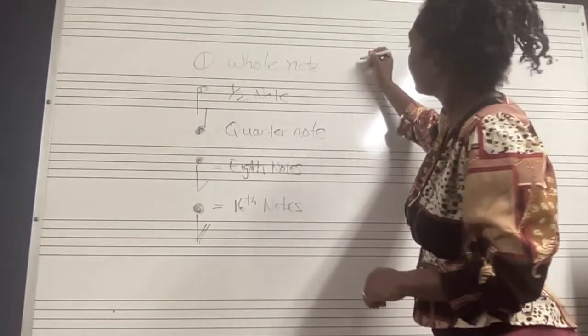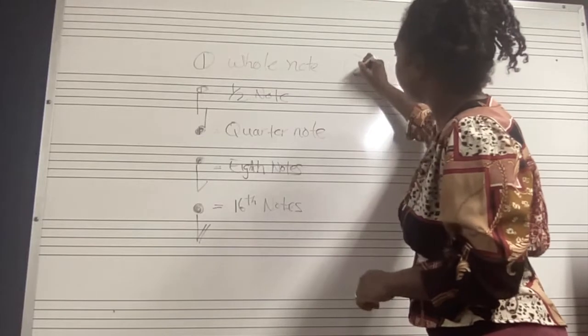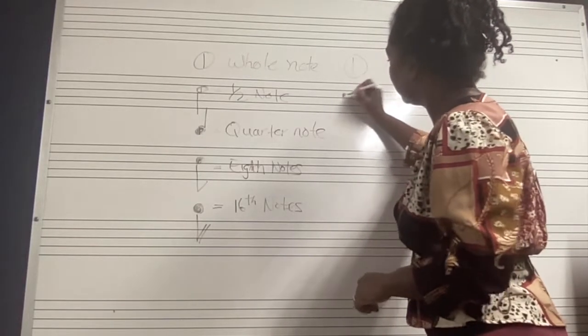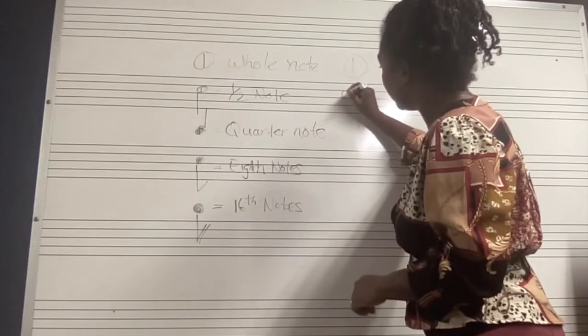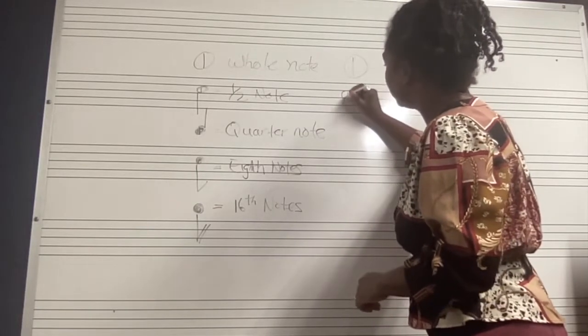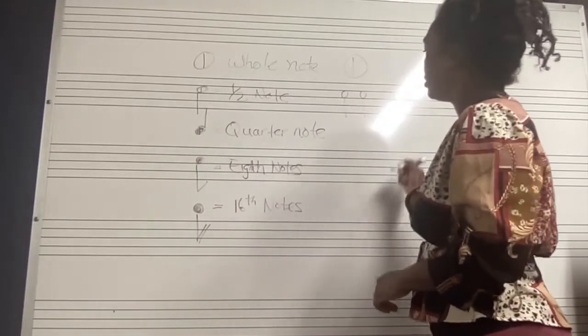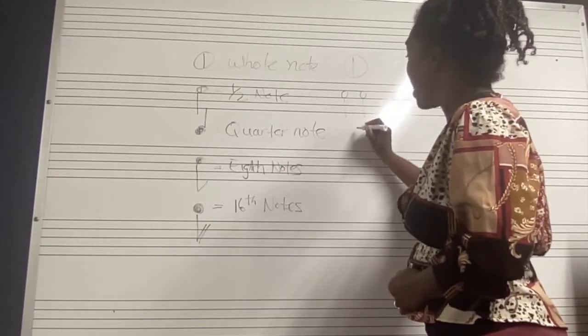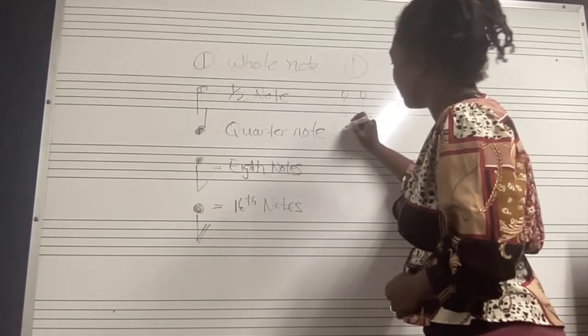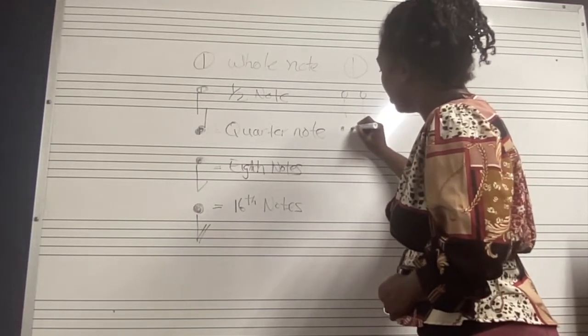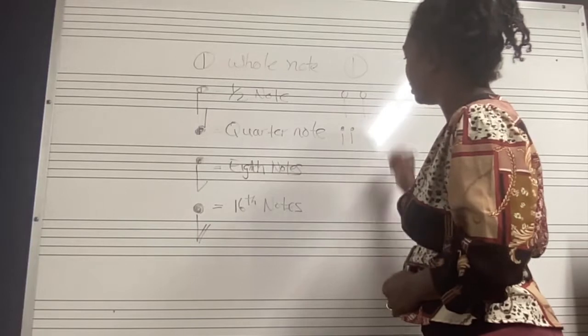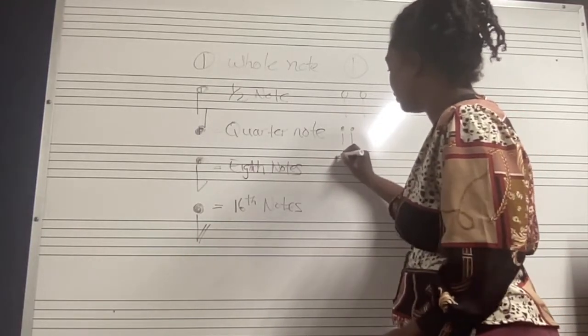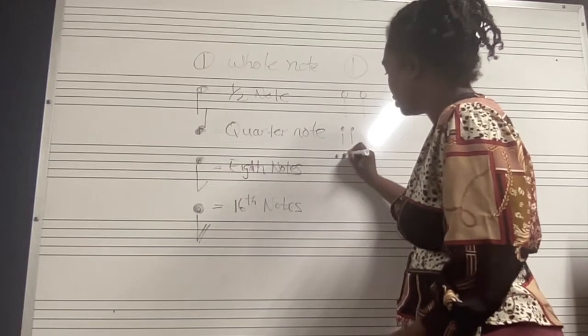The whole note cut in half equals two half notes. Half notes are the two circles with the open thing. If I cut a half note in half, it leads to two quarter notes, right?